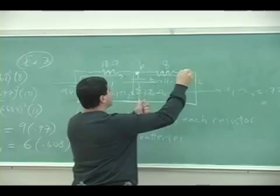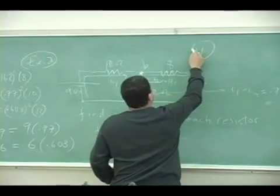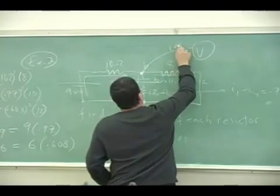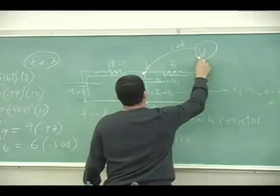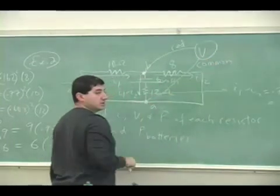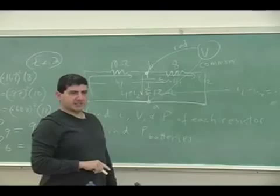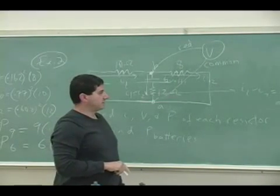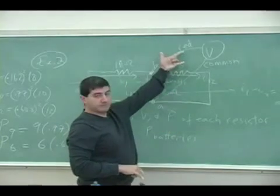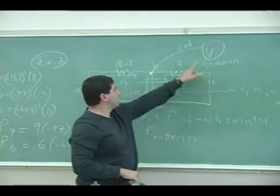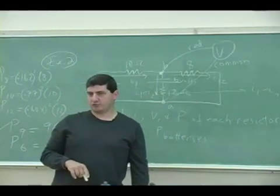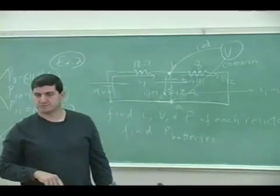That means if you take the voltmeter and you take the red outlet, put it there, and you take the common outlet and put it here, it's going to read positive 1.296 volts. If you switch them, you put the common outlet over there and the red over here, it's going to read negative 1.296 volts.